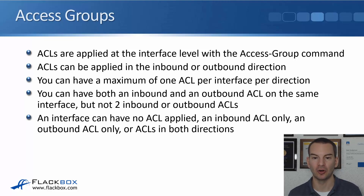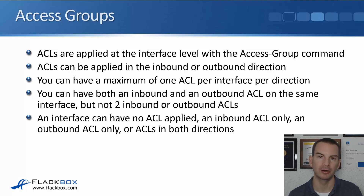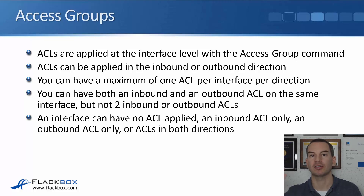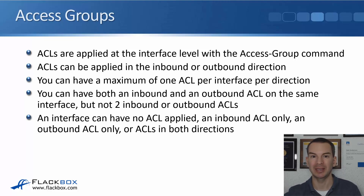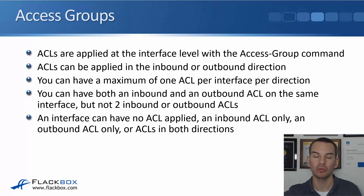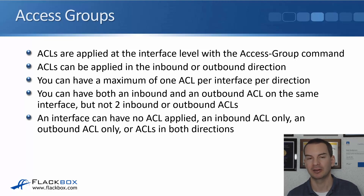ACLs can be applied in the inbound or the outbound direction, and you can have a maximum of one ACL per interface per direction. You can have both an inbound and an outbound ACL on the same interface, but you can't have two inbound or two outbound ACLs on the same interface. If you had two ACLs with conflicting entries in the same direction, the router wouldn't know which rule to apply. That's why we always have a maximum of one ACL per interface per direction.